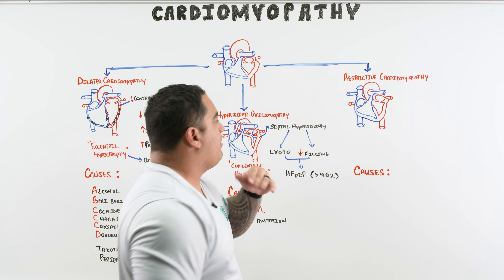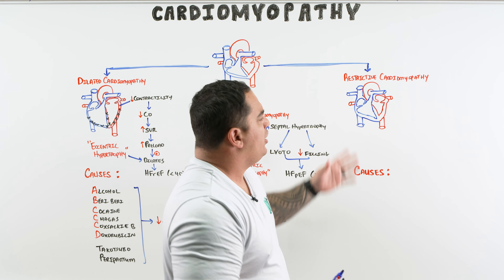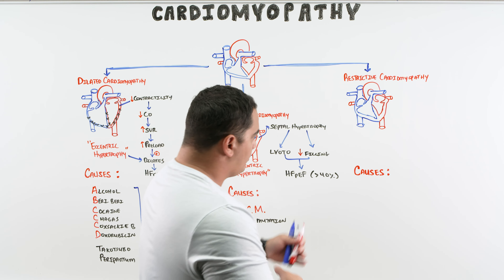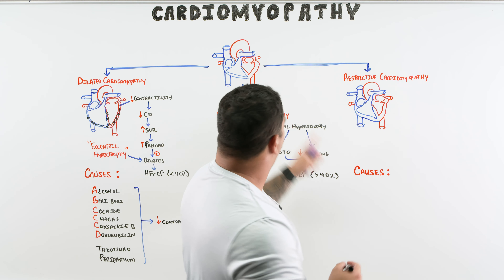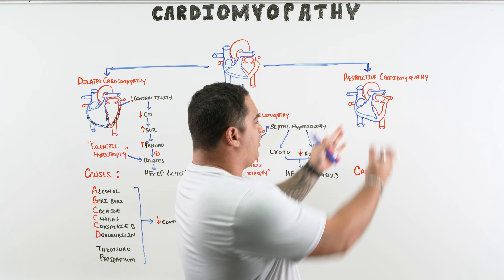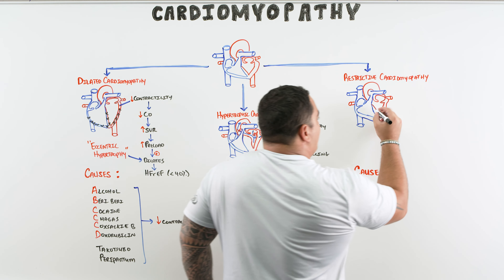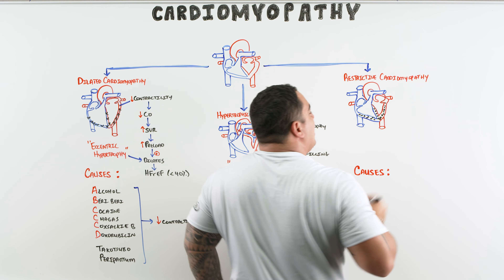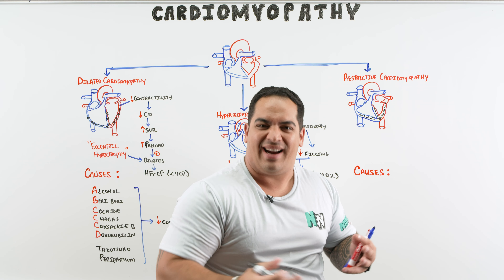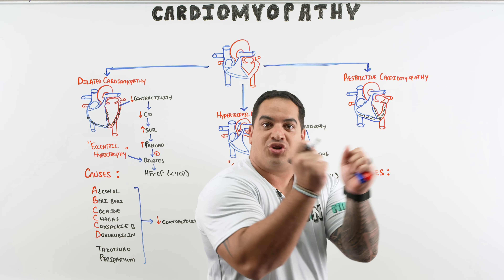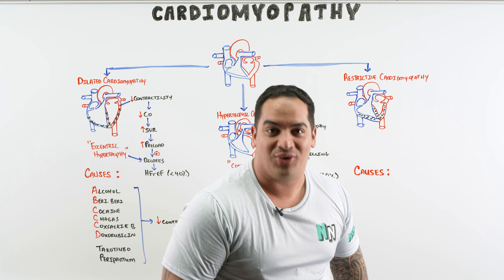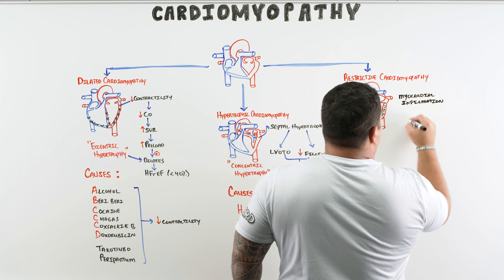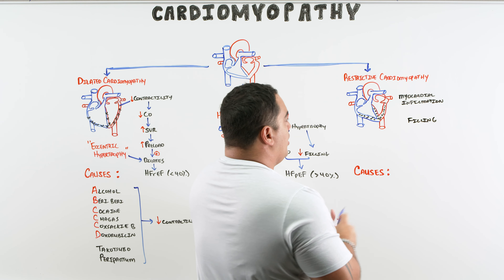The last type is restrictive cardiomyopathy — the rarest. From most to least common it goes: dilated, then hypertrophic, then restrictive. In restrictive CM, there's no dilation and no septal hypertrophy. Instead, there's an infiltrative process — substances deposit into the ventricles, making them super rigid and fibrotic. Muscle normally wants to stretch and distend, but this infiltrative tissue does not — the key concept is myocardial infiltration.